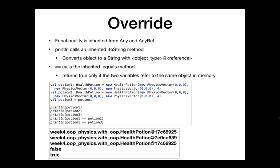Let's talk about override — a slightly different topic. We saw this last time; it's more of an inheritance topic. In Scala, everything extends Any, and all the classes we write will extend AnyRef at some point — maybe through a chain of inheritance — but every class we write does extend AnyRef, which extends Any. So we get some methods and functionality inherited from these classes.